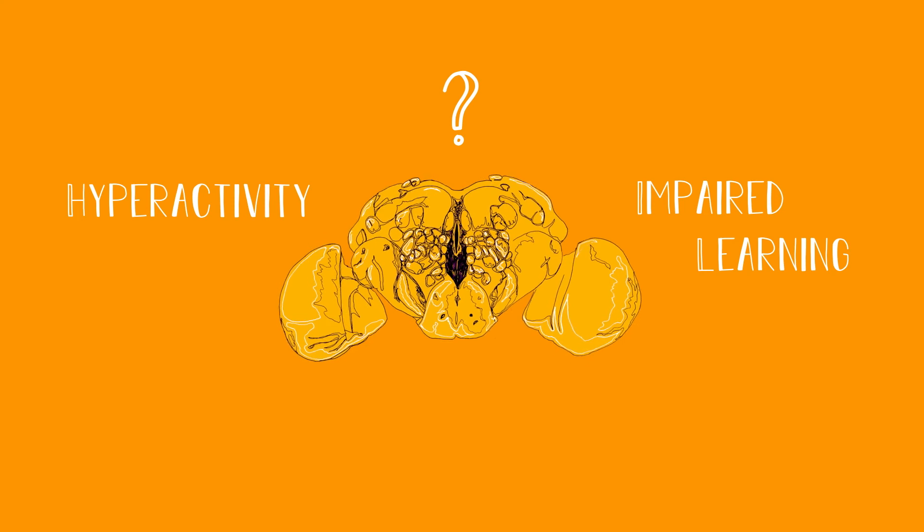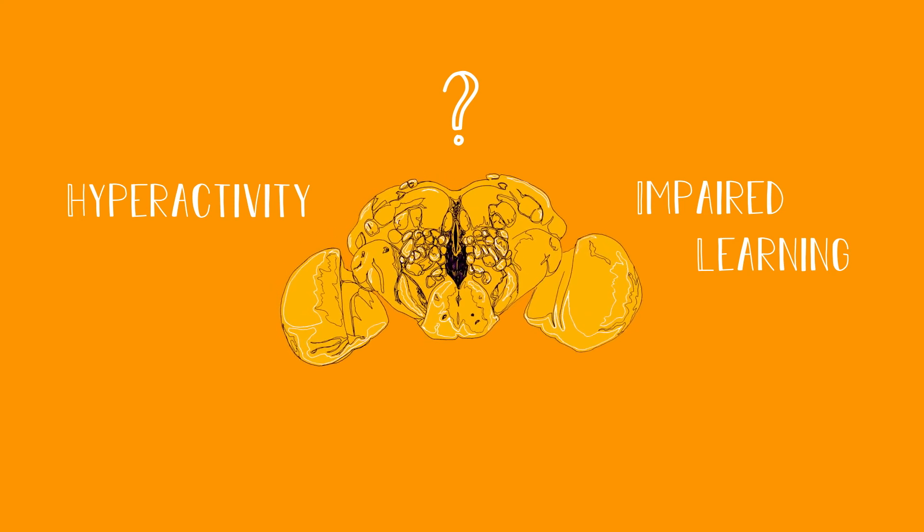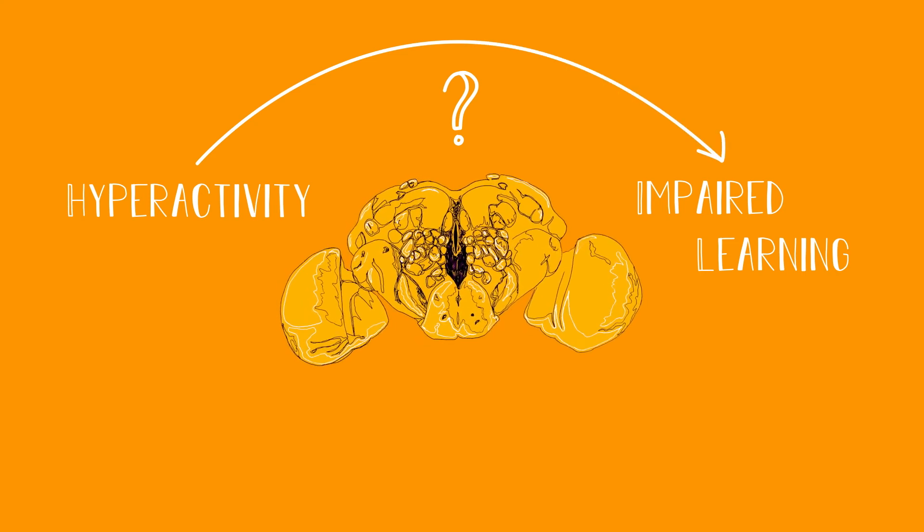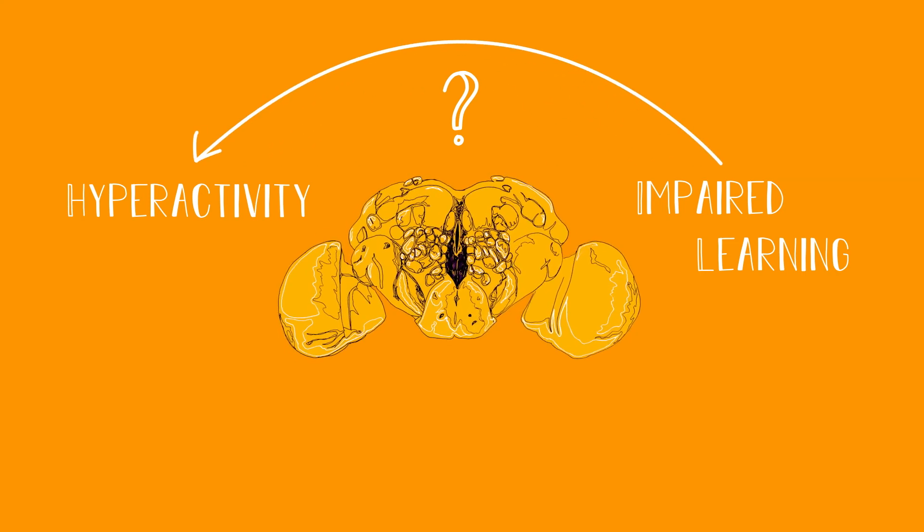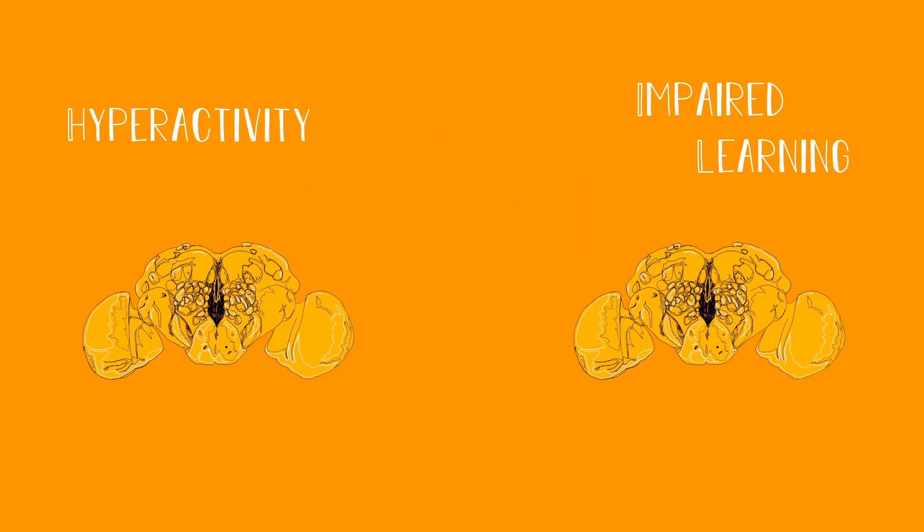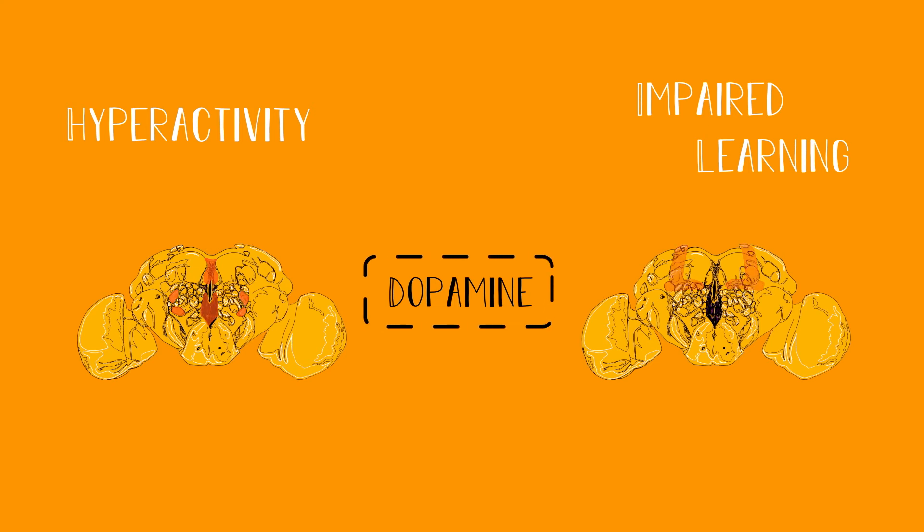ADHD has also been studied using fruit flies. ADHD is associated with hyperactivity and impaired learning. Things you wouldn't think you could measure in a fly. Researchers weren't sure if the hyperactivity was causing the learning problems or if it was the other way around. They found that in flies, each behavior comes from a different part of the brain but uses the same receptor. This kind of research has changed the way we think about ADHD, its symptoms and its treatment.